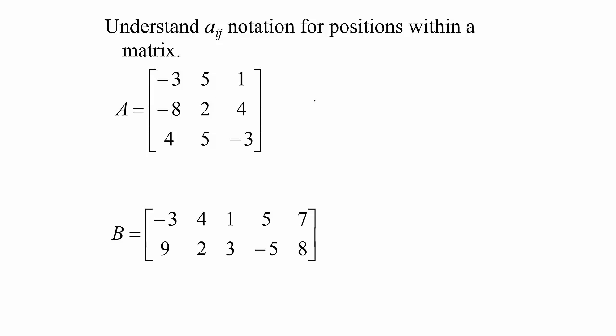In matrix A, if we wanted the entry in the first row, second column, that would be 5, because that's what's in the first row, second column.